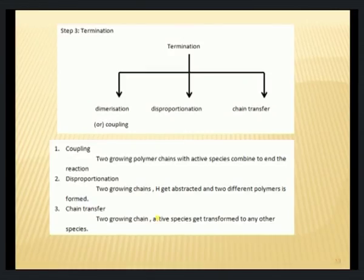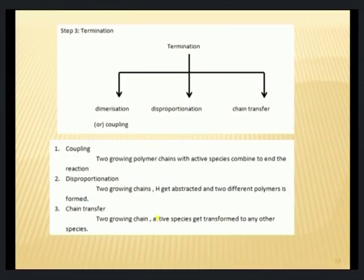After propagation, there must be an end to the reaction — termination. There are three possible ways of terminating these reactions: dimerization, disproportionation, and chain transfer. We will look into the mechanism of these three types of termination steps in the next class.